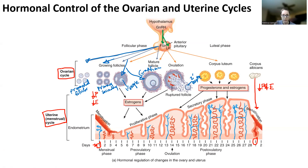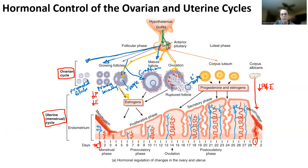What LH does is it also targets the follicle cells. What that causes is the follicle cells to release estrogen. So FSH targets all these things, while LH targets the follicle cells and causes estrogen release.